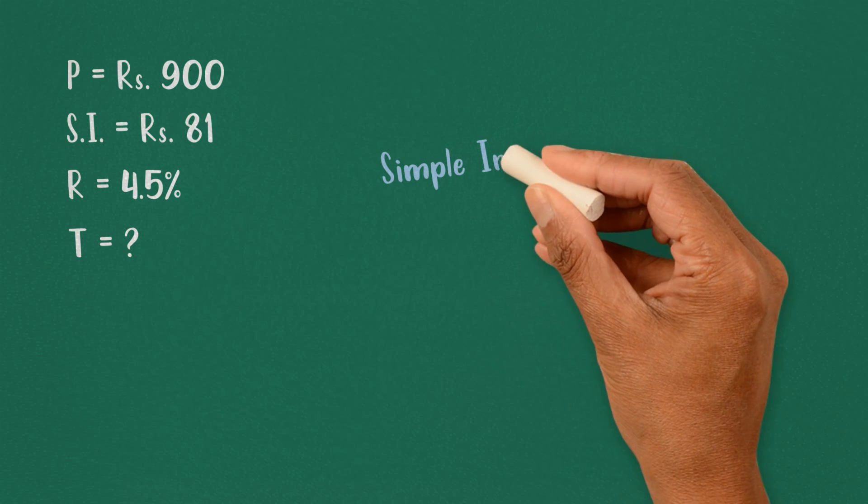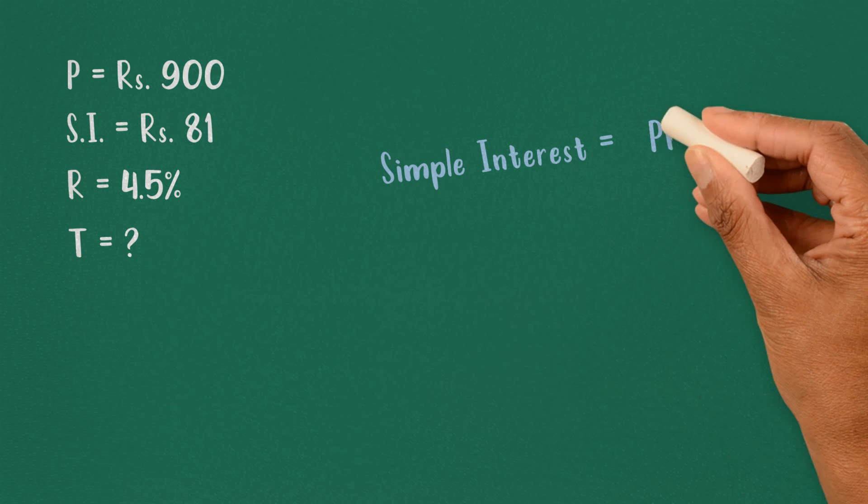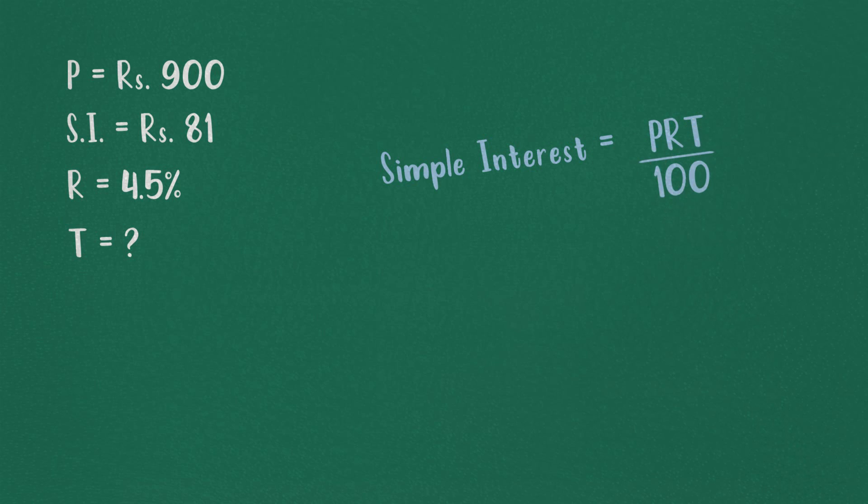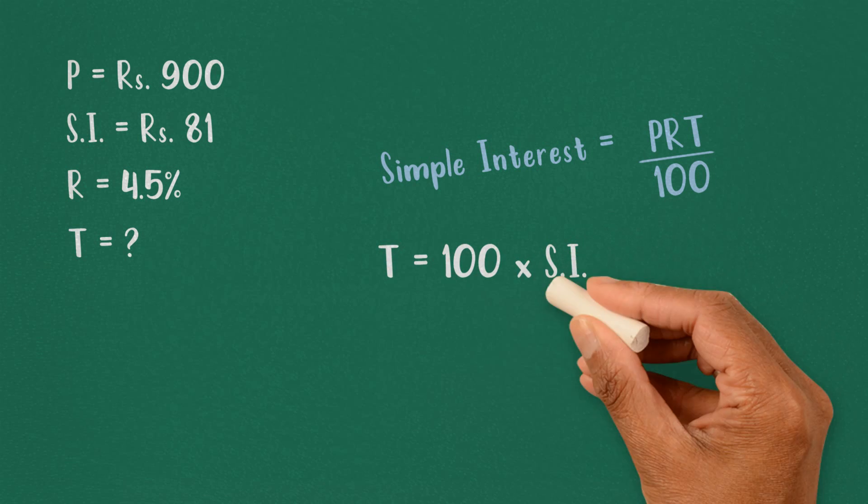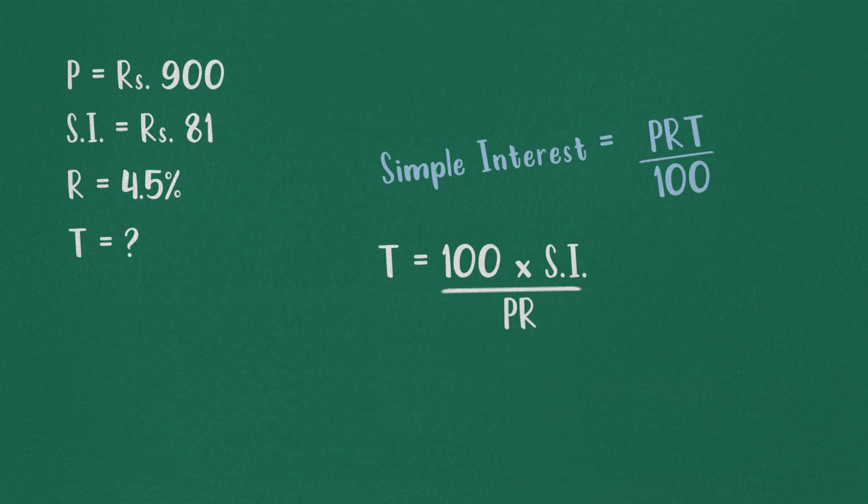For that we need to use simple interest formula. Simple interest equals PRT divided by 100. So for time, we can form the equation 100 times simple interest divided by PR.